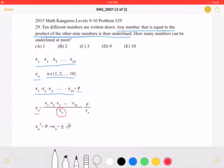Right? Because x sub n is equal to the product of the nine other numbers, not including itself.